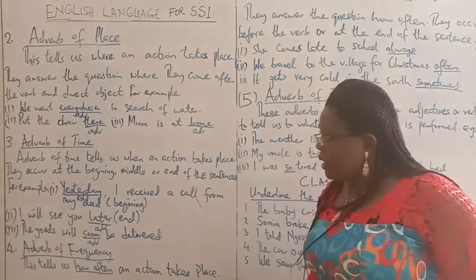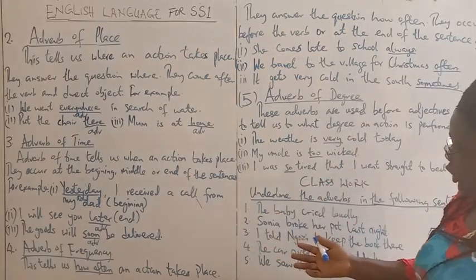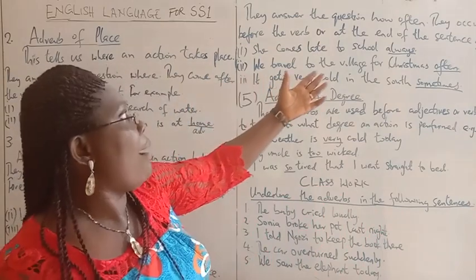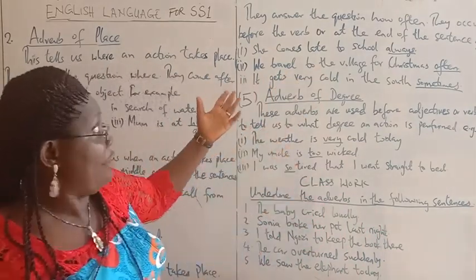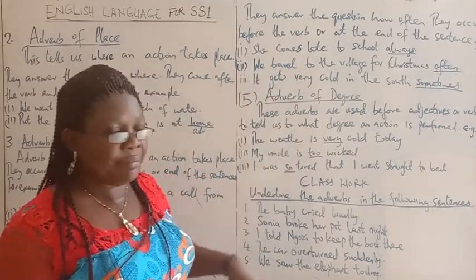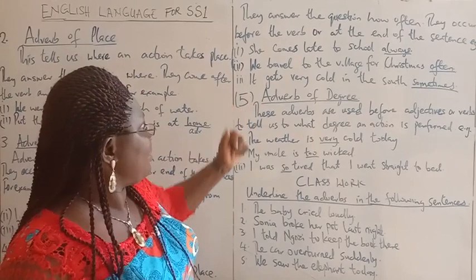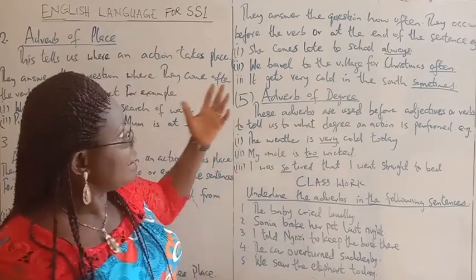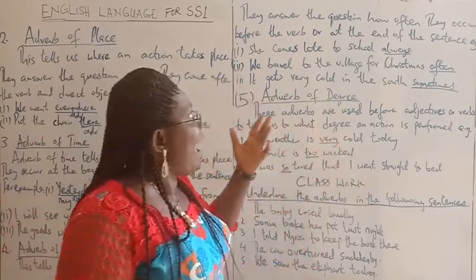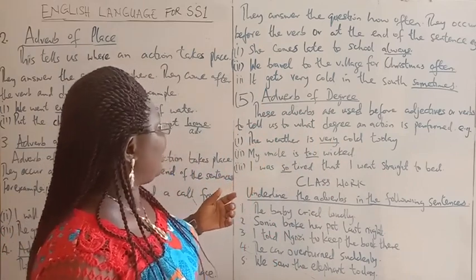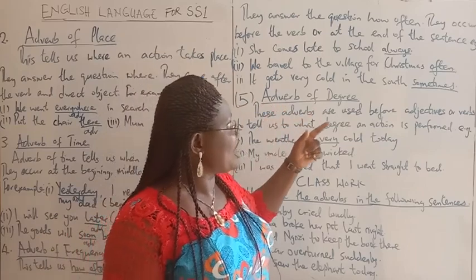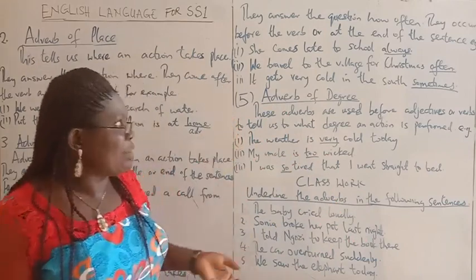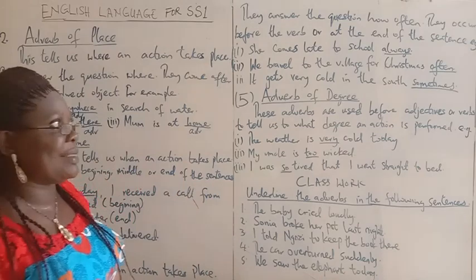Number four: adverb of frequency. This tells us how often an action takes place. They answer the question: how often? They occur before the verb or at the end of the sentence. For example: 'She comes late to school, always' — 'always', adverb of frequency. 'We travel to the village for Christmas often' — 'often', adverb of frequency. 'It gets very cold in the south sometimes' — 'sometimes', adverb of frequency.